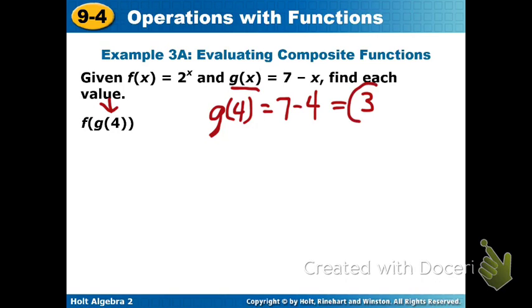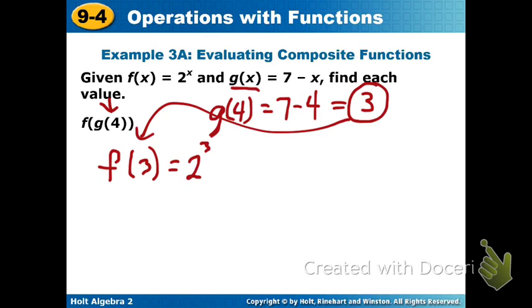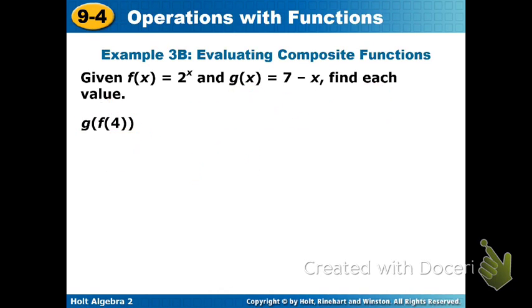Now just like on that visual you saw before, this output now becomes the input of our f of x. So now we have our f of x which will make f of 3. Now we bring that output as our input. So that would give us 2 to the x or 2 to the 3rd power. 2 to the 3rd power would be 8. And there's your final output. So your f of g of 4 equals 8.